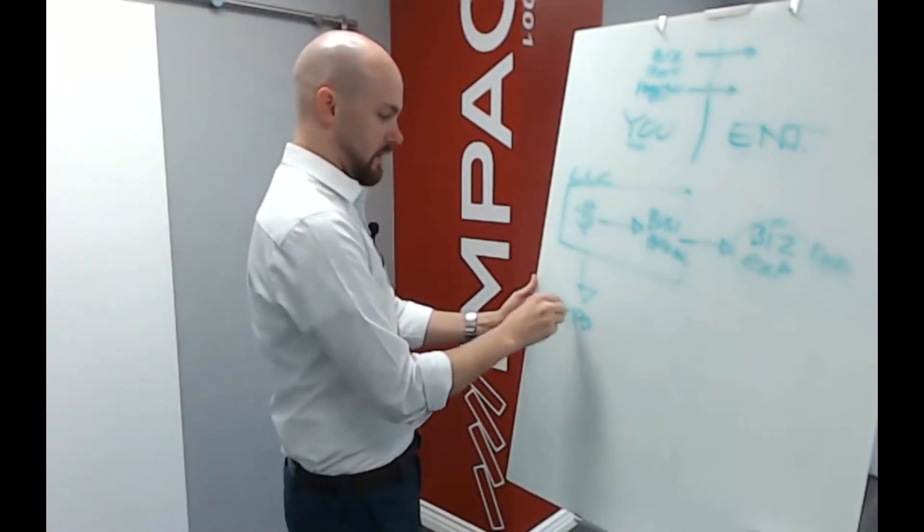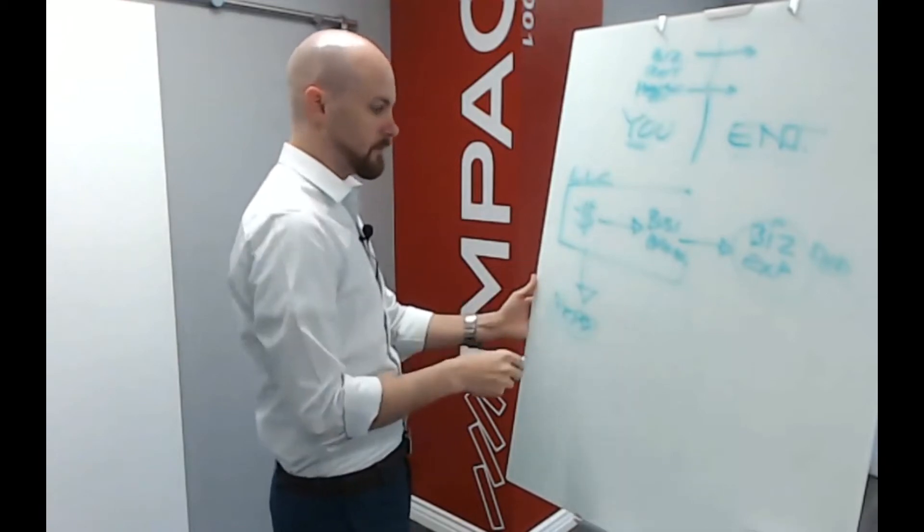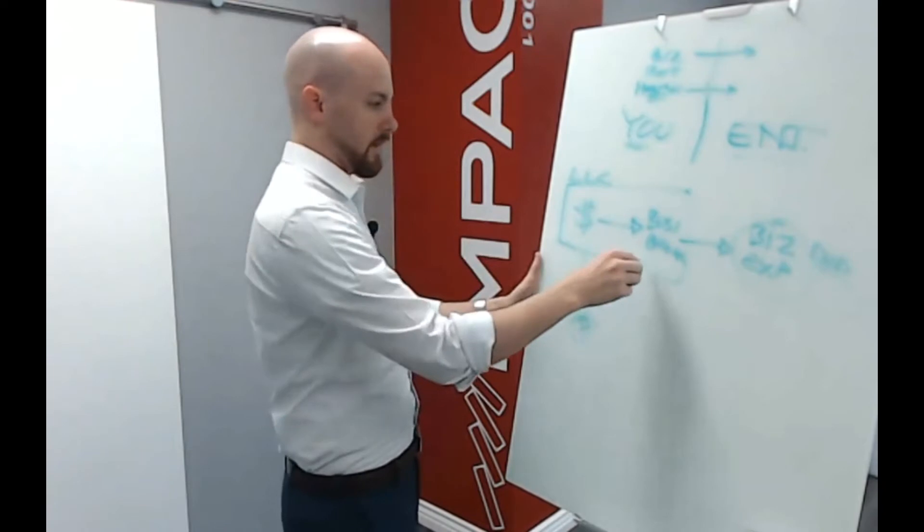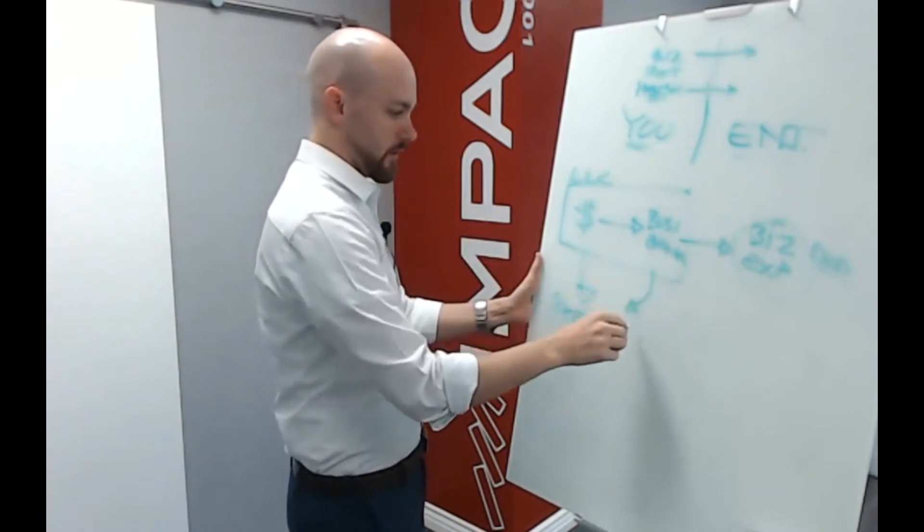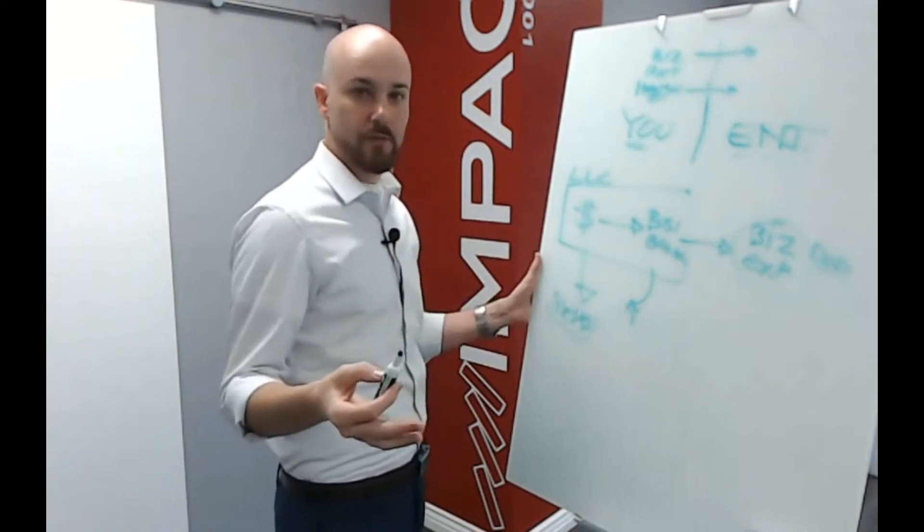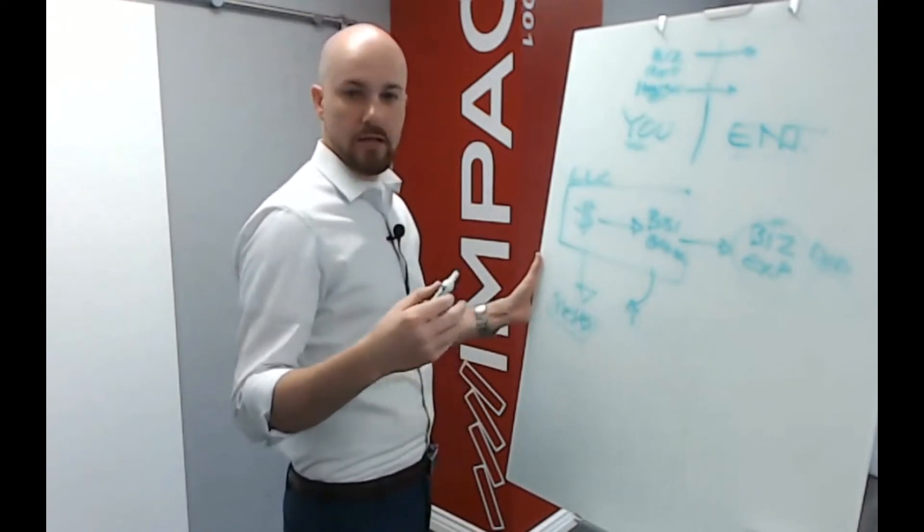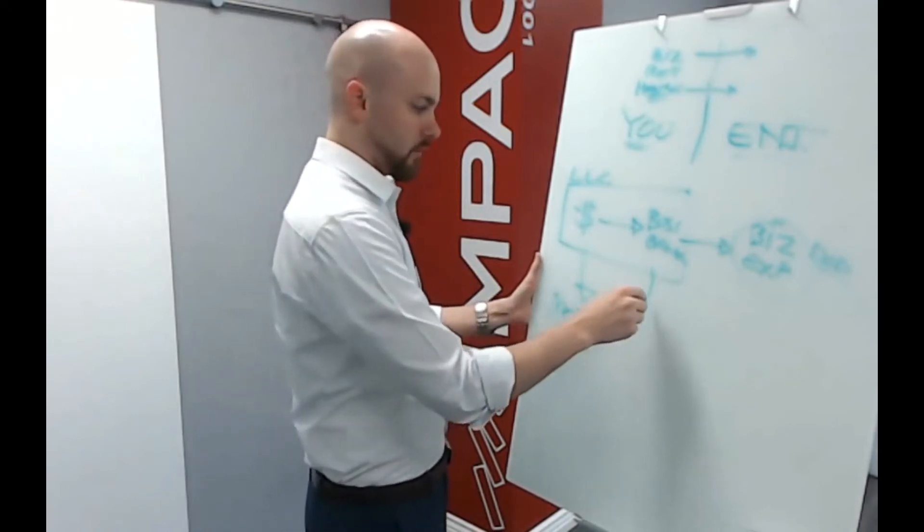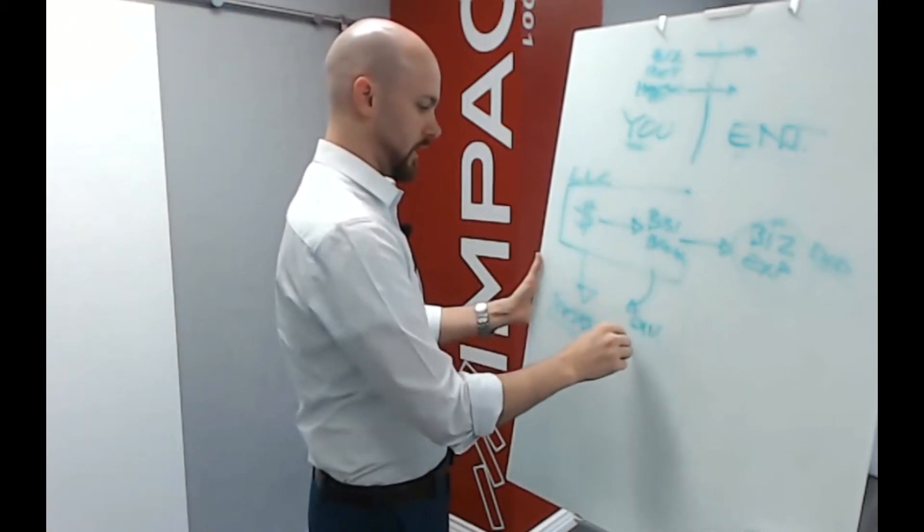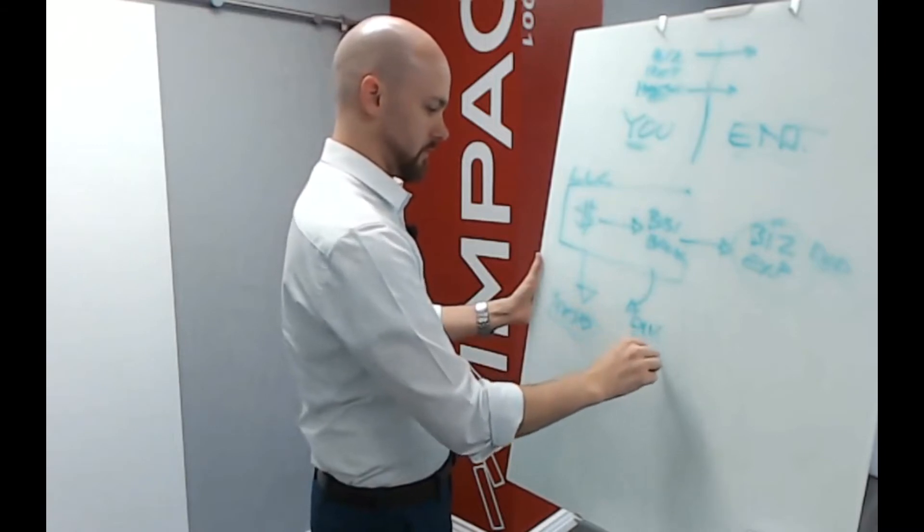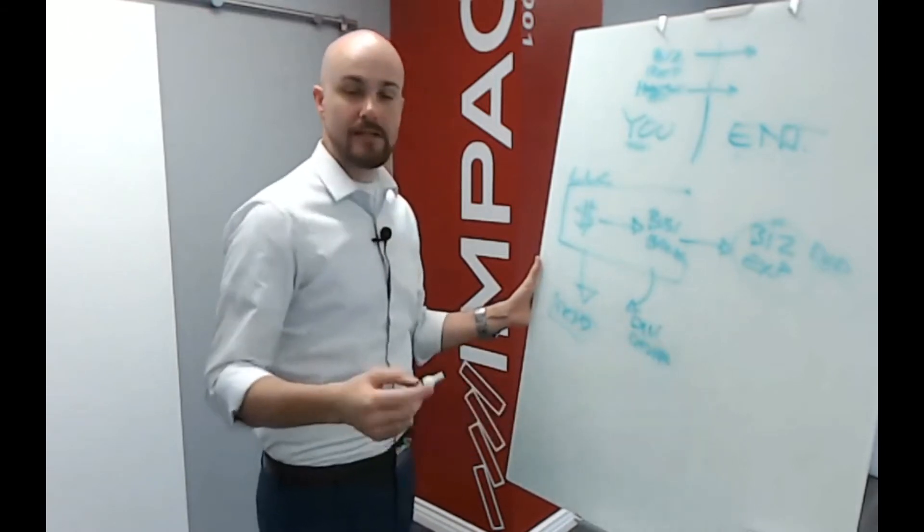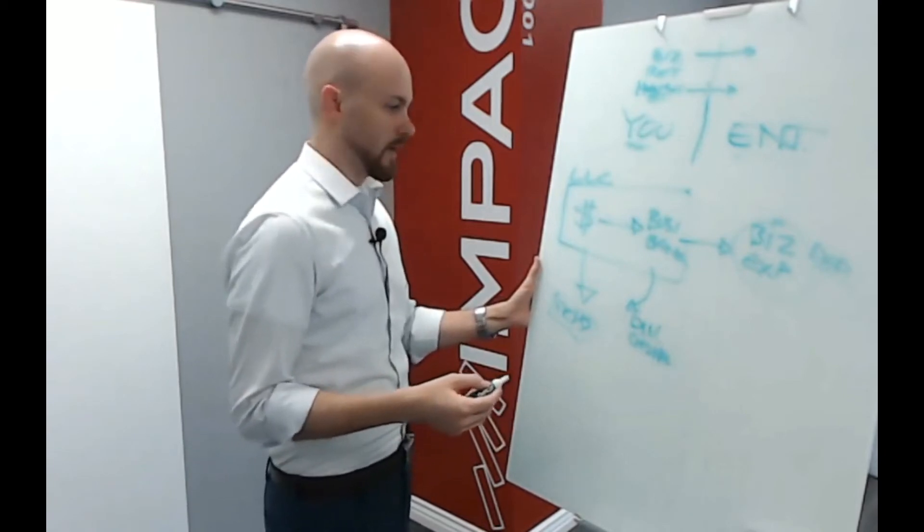We take from this, come to us, and we pay ourselves a certain amount, and then anything extra that we take out is considered a shareholder distribution or a dividend. And then, of course, by taking that, then we're taxed. So if we take a dividend or a shareholder distribution, then it's taxed differently. It's taxed at a lower rate.